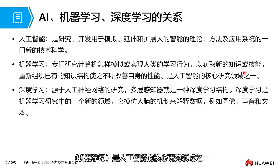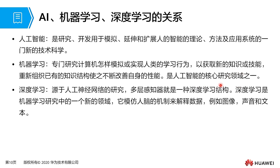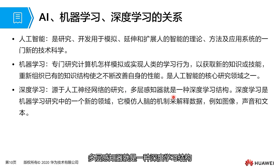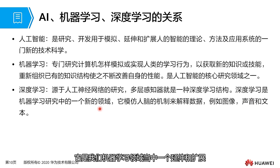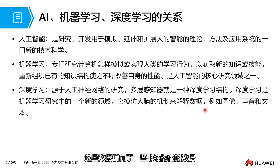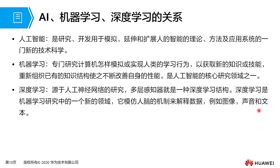Deep learning originates from research on artificial neural networks, which is a branch of machine learning. The multi-layer perceptron is a deep learning structure. Deep learning is a new field within machine learning — an extension and expansion of it. Deep learning refers to mimicking the mechanisms of the human brain to interpret data, typically focusing on unstructured data such as images, sounds, and text.